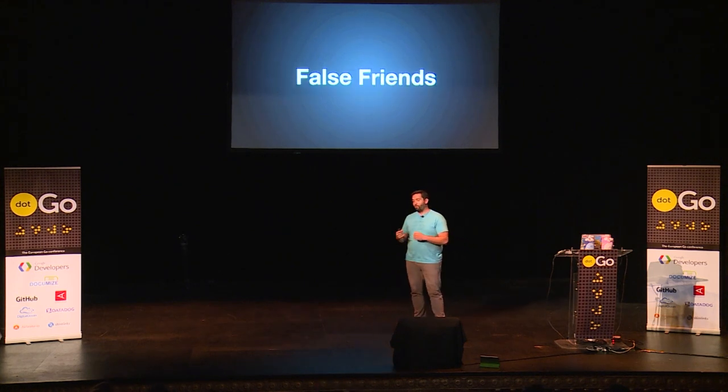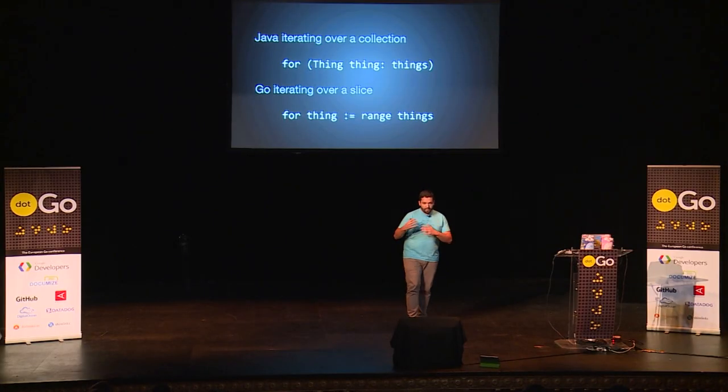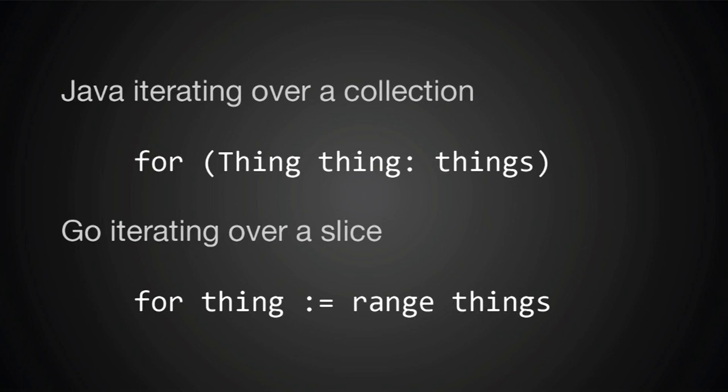So this is what we call false friends. And false friends occur in natural languages, but they also occur in programming languages. In this case, we're seeing something that looks really similar — iterating over a collection in Java and iterating over the elements of a slice in Go. And it looks really similar, but it turns out that the second piece of code is actually not correct.